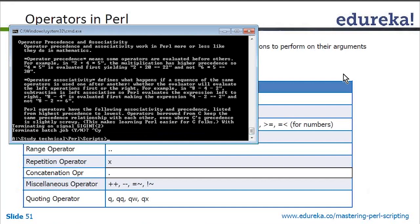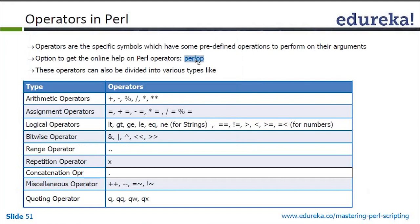You can just do PerlDoc specified by the keyword to see the specific meaning of Perl operators. These operators can be divided into different types: arithmetic operators, assignment operators, logical operators, bitwise operators, range operator, repetitive operator, concatenation operator, miscellaneous operator, and quoting operator.